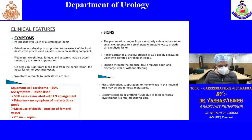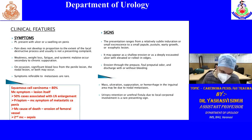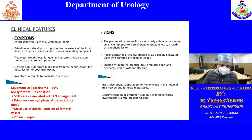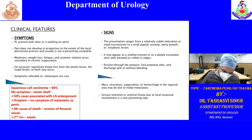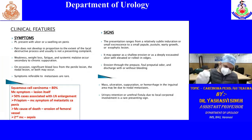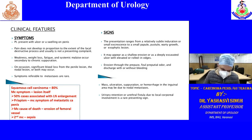The most common symptom of CA penis is the lesion itself — it is visible. 50% of cases are associated with lymph node enlargement, but of those 50%, half will resolve with antibiotic treatment. Priapism is the most common symptom of metastatic CA penis. The most common cause of death in CA penis is erosion of the femoral vessels, leading to bleeding. The second most common cause of death is sepsis.